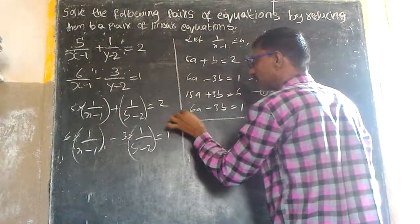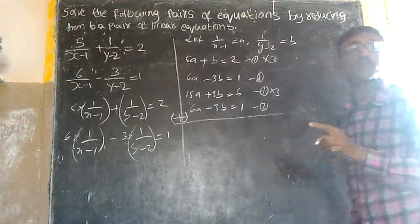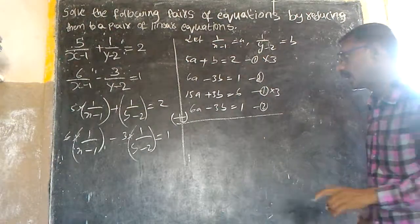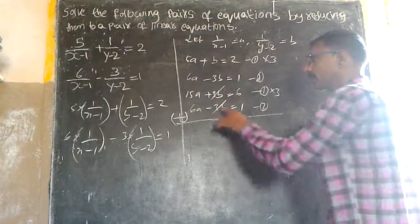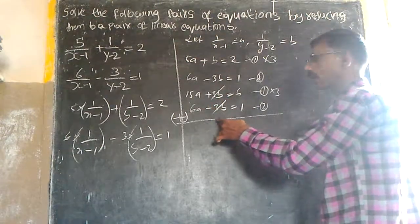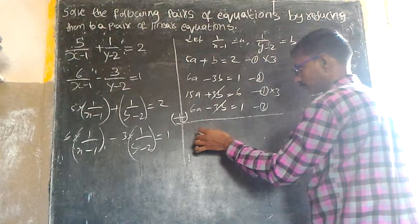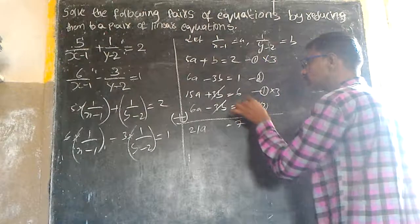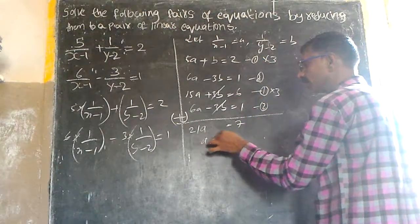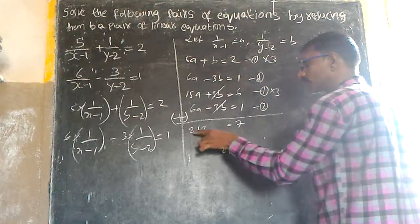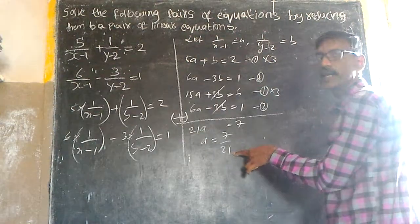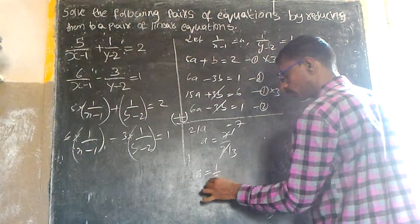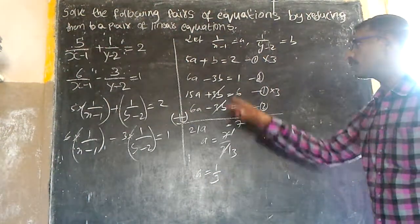Adding the two equations, the 3b terms cancel. We get 15a plus 6a equals 21a, and 6 plus 1 equals 7. So 21a is equal to 7, which gives a is equal to 7 by 21, which simplifies to a is equal to 1 by 3.